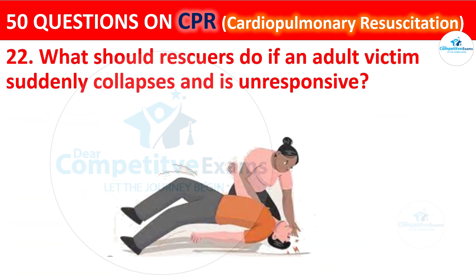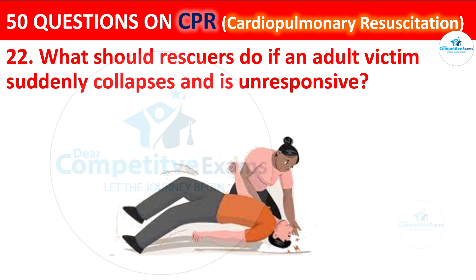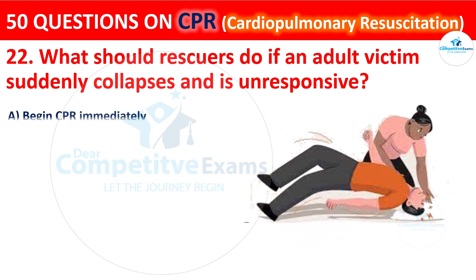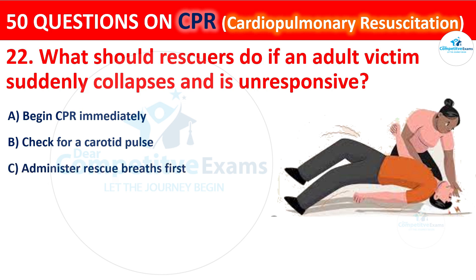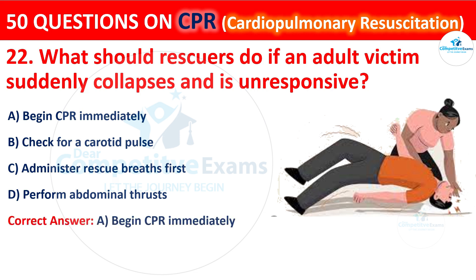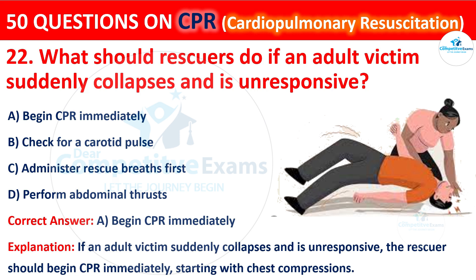Question 22: What should rescuers do if an adult victim suddenly collapses and is unresponsive? Your options are: Begin CPR immediately, Check for a carotid pulse, Administer rescue breaths first, or Perform abdominal thrusts. The correct answer is A: Begin CPR immediately. If an adult victim suddenly collapses and is unresponsive, the rescuer should begin CPR immediately, starting with chest compressions.